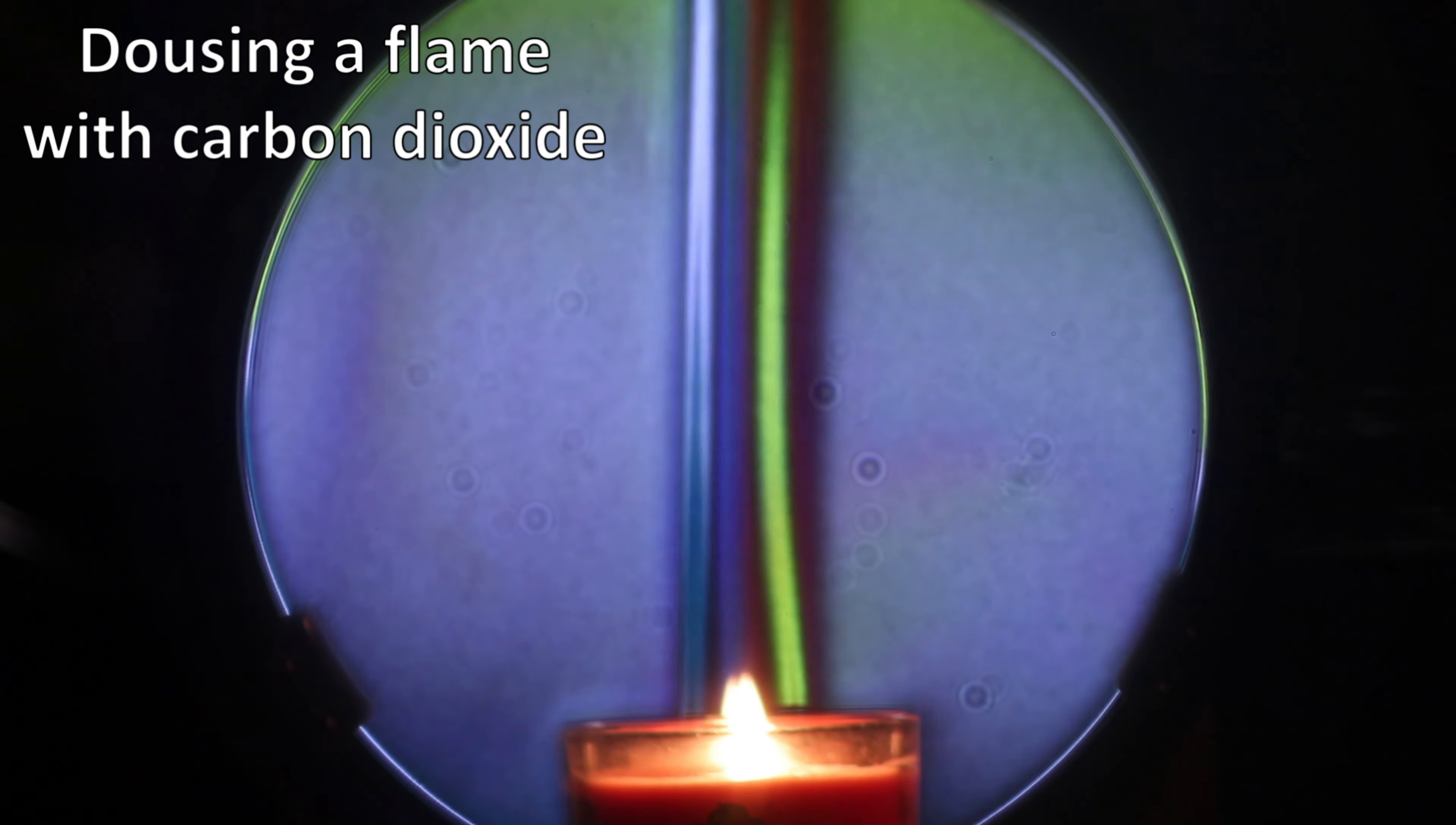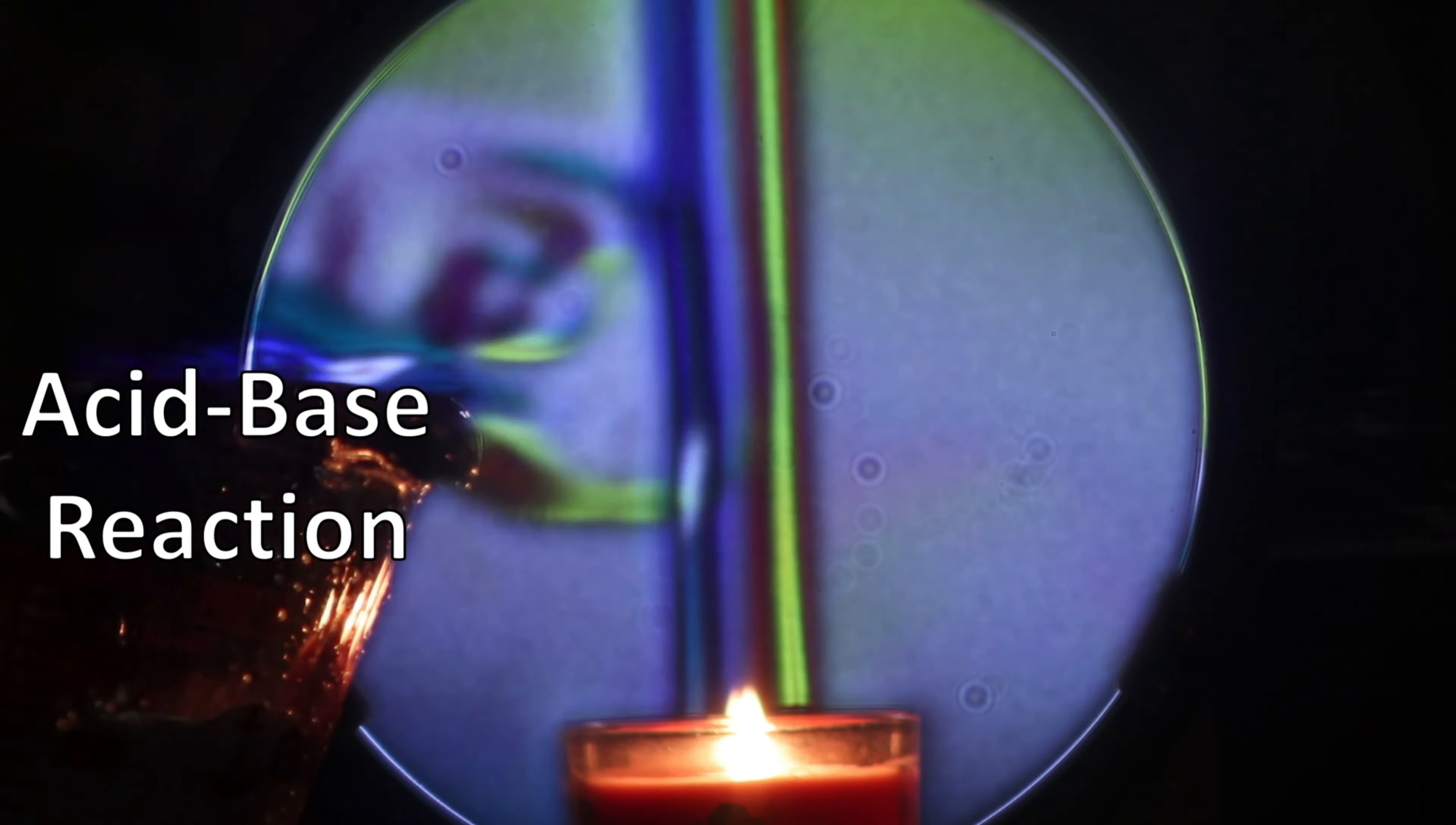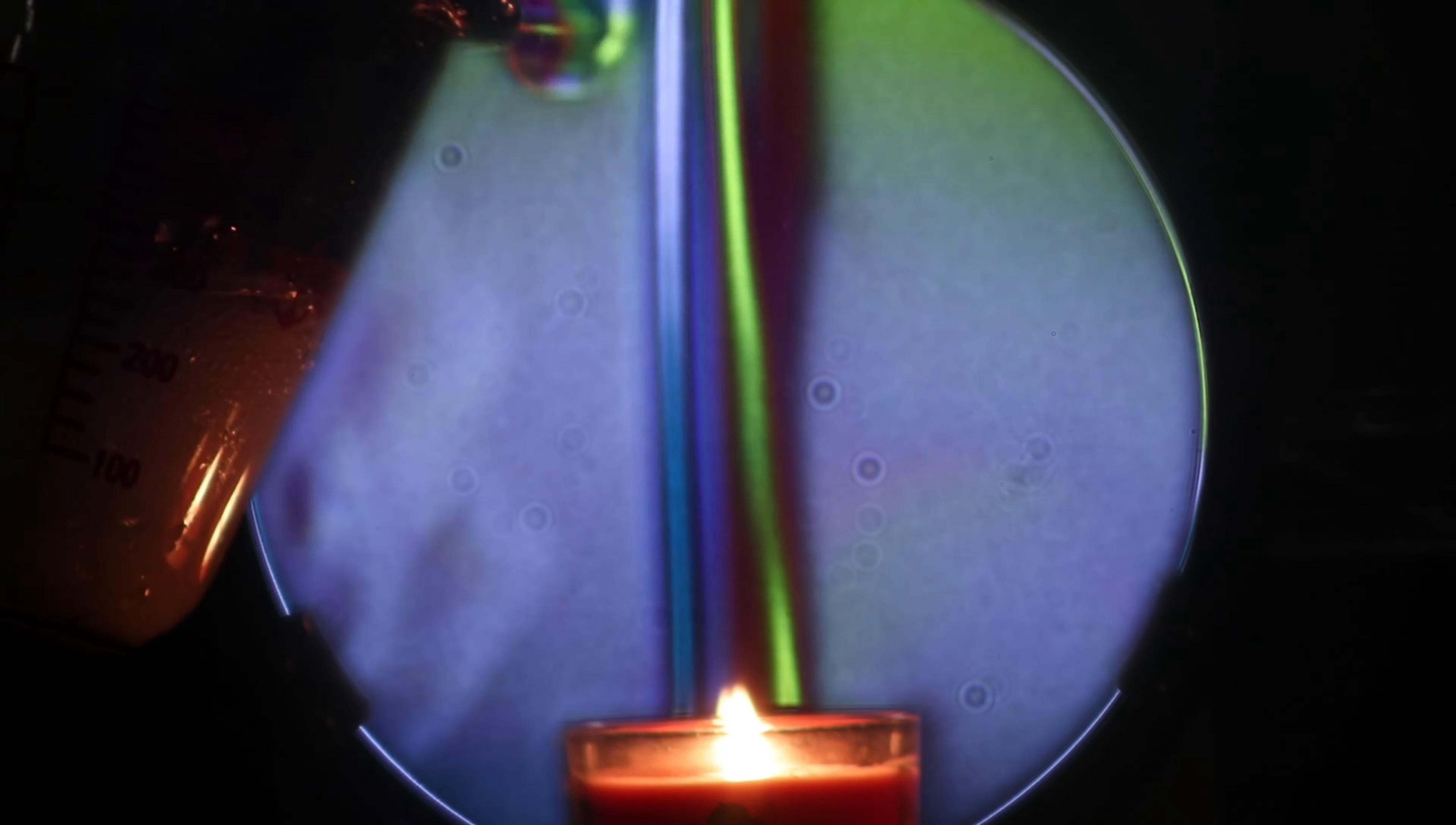I'm gonna go ahead and pour a little bit of carbon dioxide on that. So I've got my measuring cup here. I've got my vinegar, baking soda and vinegar. Get the reaction going. That's carbon dioxide right there. Let's put out our flame with the color filters. See what that looks like.